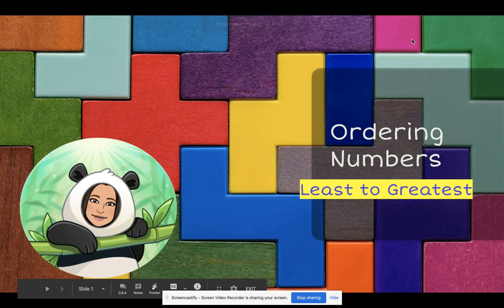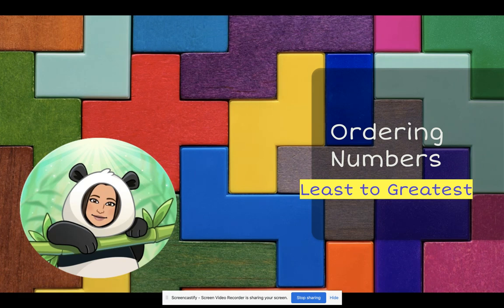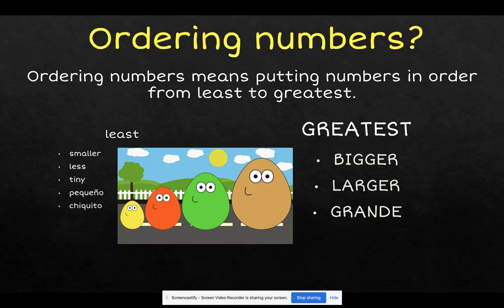Today we are going to be ordering numbers from least to greatest. Ordering numbers means putting the numbers in order from least to greatest — least being the smallest number and greatest being the biggest number.